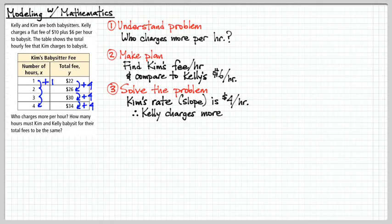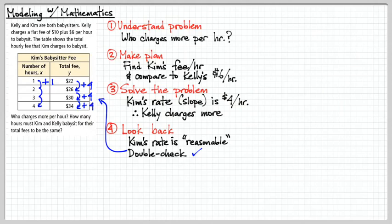So our plan will be to figure out what Kim's fee is, because we don't know what her fee is. Kelly's fee is given to us, it's six dollars an hour. So now let's solve the problem. We notice here that Kim, if we were to calculate the slope, if we took this as one point and took this as another point, I have 26 minus 22, that's 4, divided by 2 over 1. So our slope would be 4. Another way to think about it is every time we increment by one hour, after every additional hour, the fee goes up by $4. So that tells us Kim's rate, that tells us our slope, which is $4 per hour. Therefore, Kelly charges more, because Kelly charges $6. Kim charges $4 per hour. And as we look back to the problem, it looks kind of reasonable.